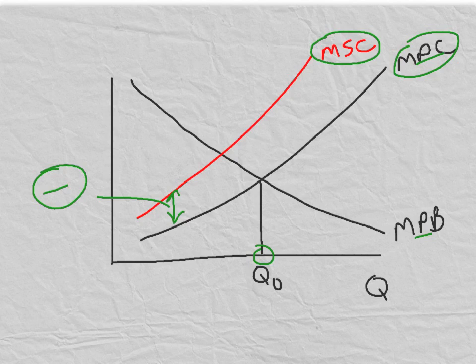However, for society to be well-off, we need the market to produce less. We need the market to consider the social costs and therefore reach an equilibrium at Q1.